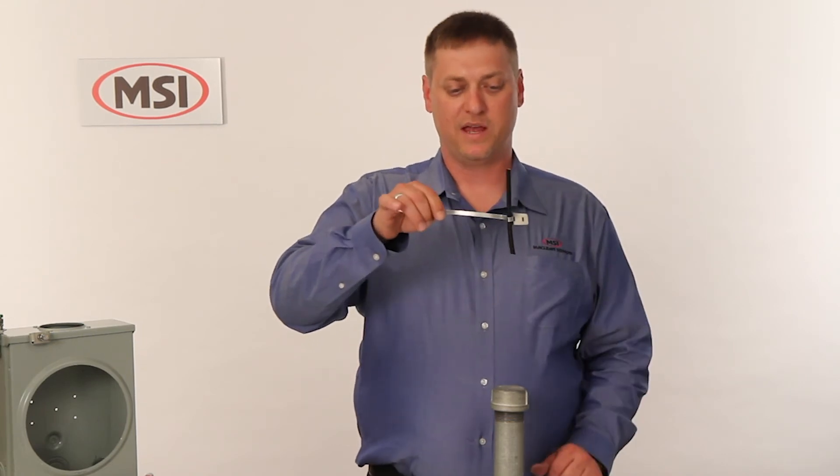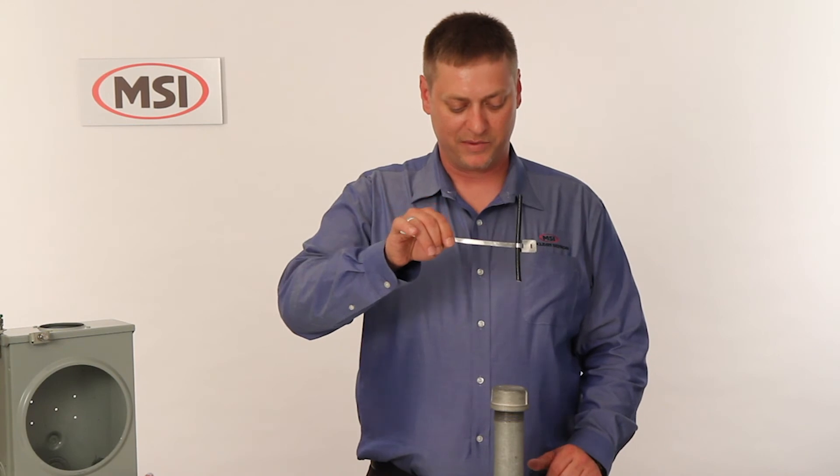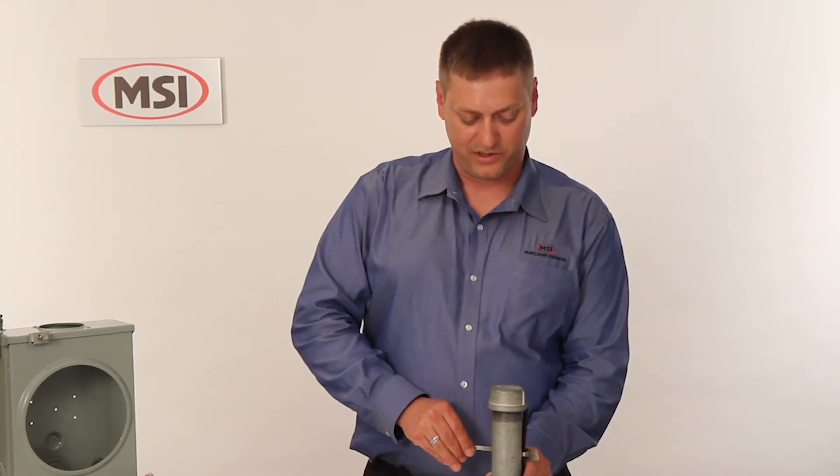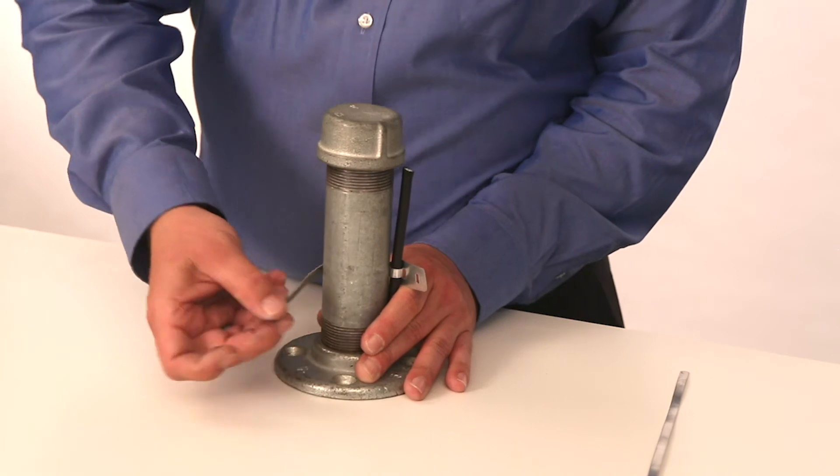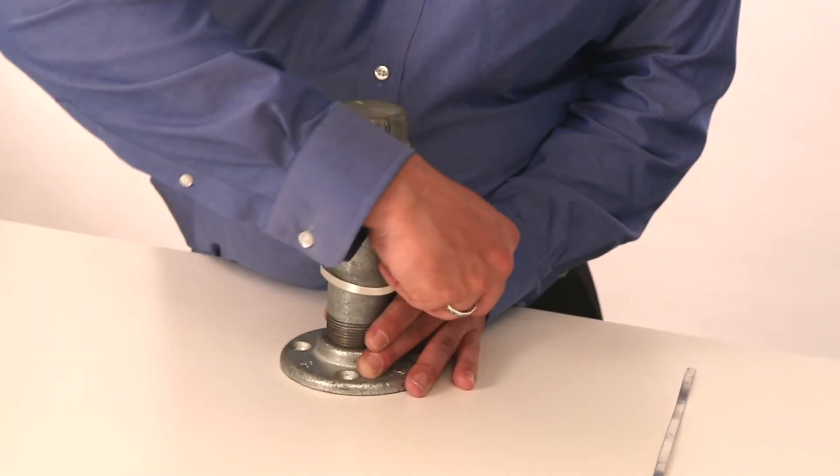Once you have the cable inside the aluminum cable tie, put it onto the conduit itself. Go one full wrap around to the second locking head.